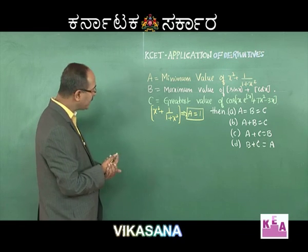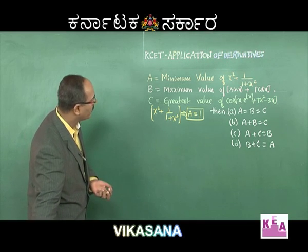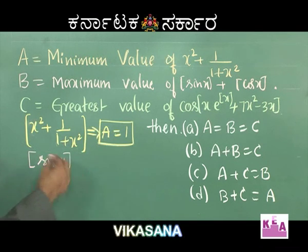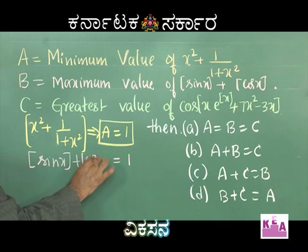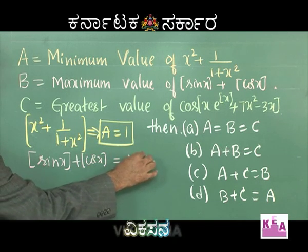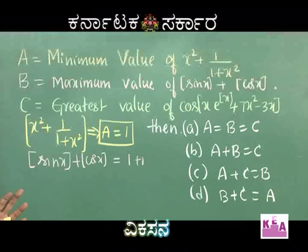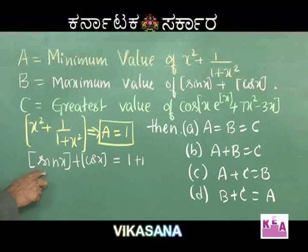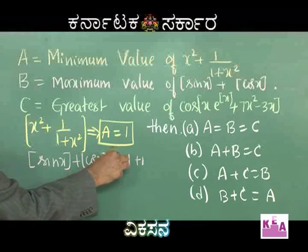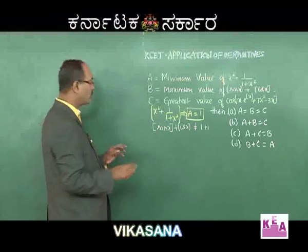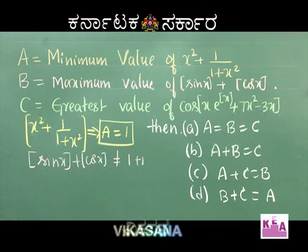Coming to B: maximum value of ⌊sin x⌋ + ⌊cos x⌋. Maximum value of ⌊sin x⌋ is 1 and maximum value of ⌊cos x⌋ is also 1, giving 1 + 1 = 2 — provided sin x and cos x both become 1 simultaneously. But at no point do sin x and cos x both equal 1. Therefore ⌊sin x⌋ + ⌊cos x⌋ cannot equal 2.